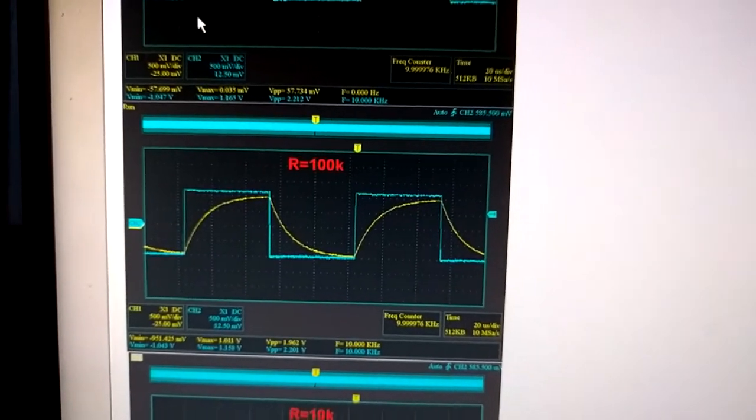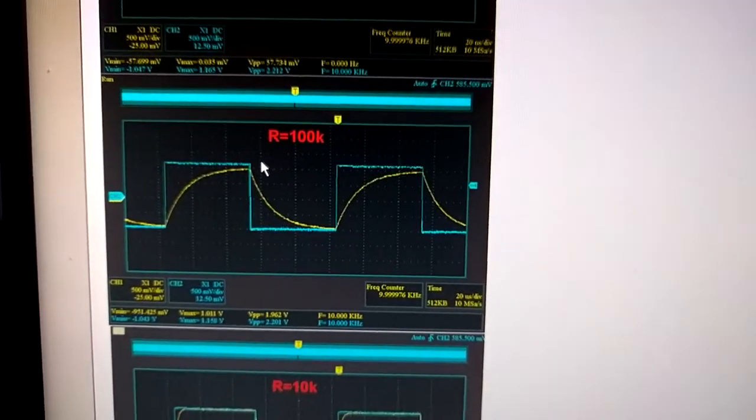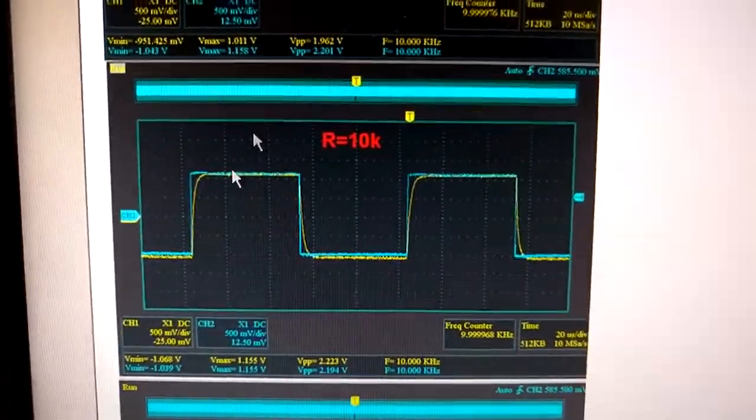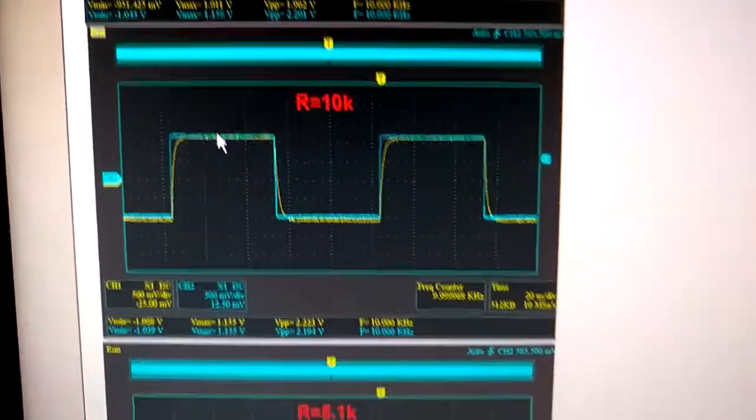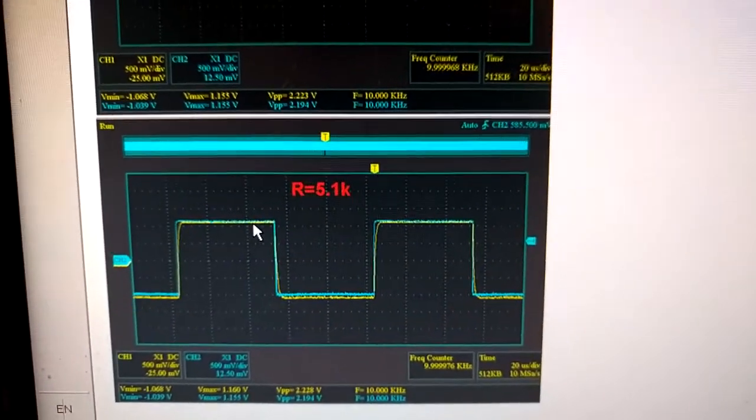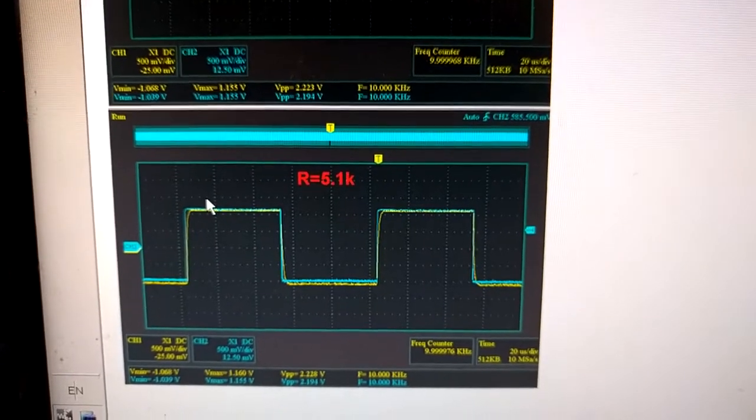Then I connect the probe to the generator through the resistance R 100K, and we see that it is no longer square pulses. It is not good. The same is true for 10K. I have small rounded corners and 5K.